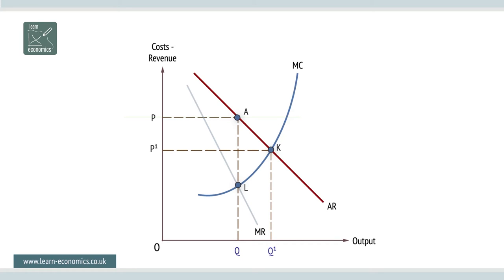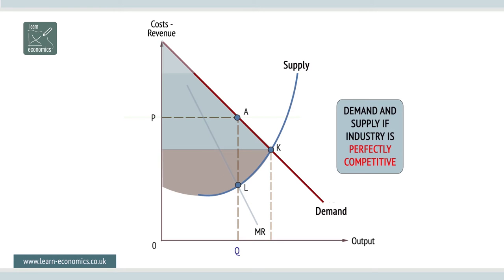The profit maximizing monopolist will operate at output Q and price P. So why is this a problem? If the industry is perfectly competitive, equilibrium would be at point K, with welfare at maximum. Welfare is the sum of the industry's consumer and producer surplus.